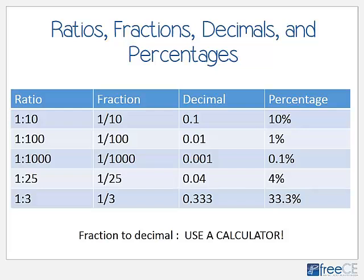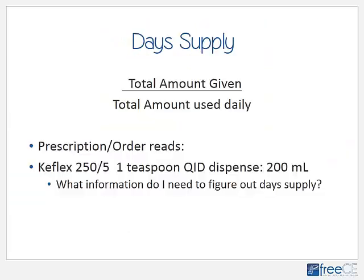Since we've talked about ratios, fractions, decimals, and percentages, here's a comparison chart showing their relationships side by side. As you can see: 1:10 is the same as 1/10, 0.1, or 10%; and 1:3 is the same as one-third, 0.333, or 33.3%. The easiest way to convert between fractions and decimals is to use a calculator.